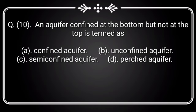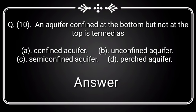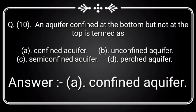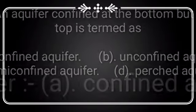Question 10: An aquifer confined at the bottom but not at the top is termed as — Option A: Confined aquifer, Option B: Unconfined aquifer, Option C: Semi-confined aquifer, Option D: Perched aquifer. Answer is Option A: Confined aquifer.